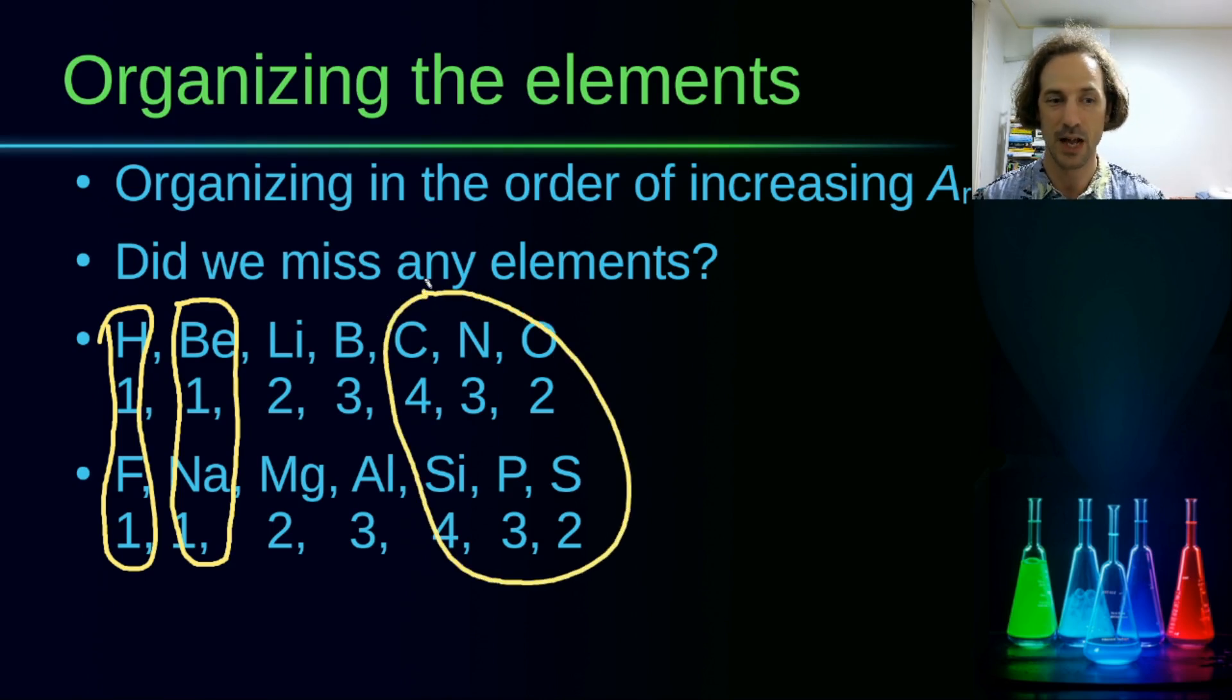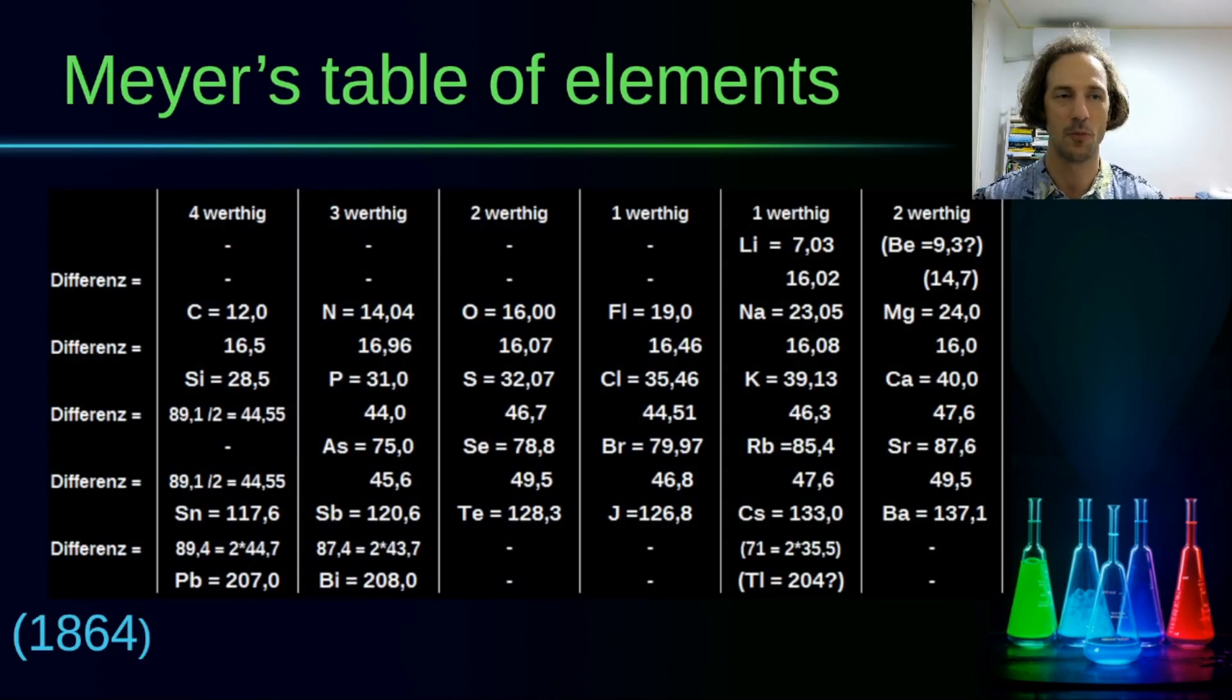Based on this, in 1864 Meyer made his table of elements. Vertig in the top here just means valence in German. You can see some of the elements had different symbols in German than what we know and love. For example, fluorine here is written as Fl and iodine is written as J.